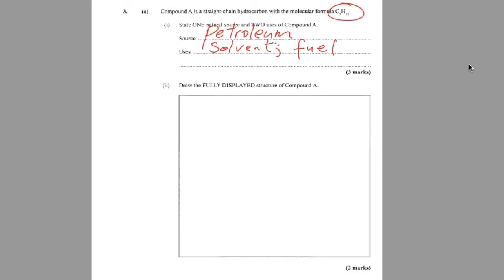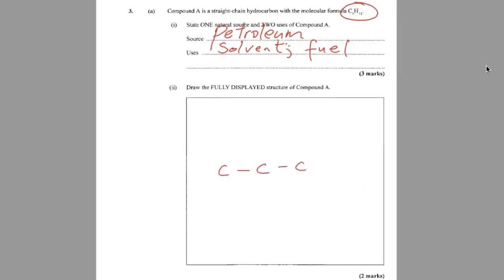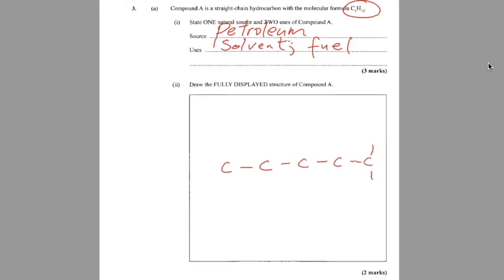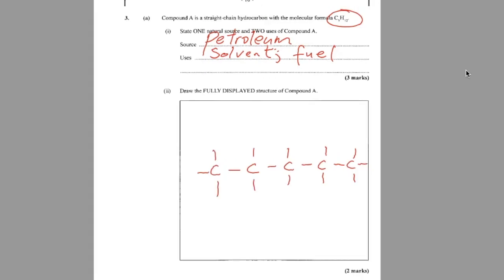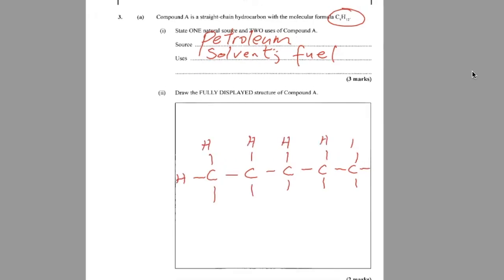Part two. Draw the fully displayed structure of compound A. So we're drawing the fully displayed structure of pentane. Pent means five and A is the last name telling us it's from the alkane series. So there will be no carbon-carbon double bond. It's a saturated hydrocarbon. So we need five carbon atoms and we're going to adorn them beautifully with their hydrogens. Drawing this can be therapeutic.